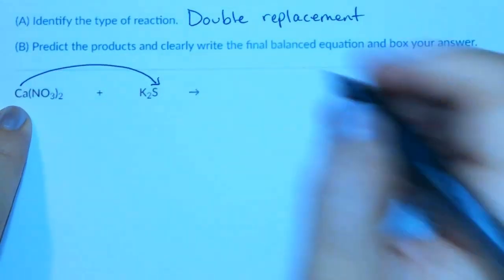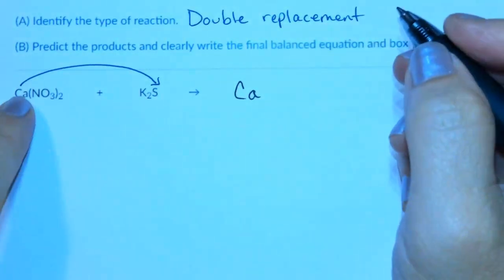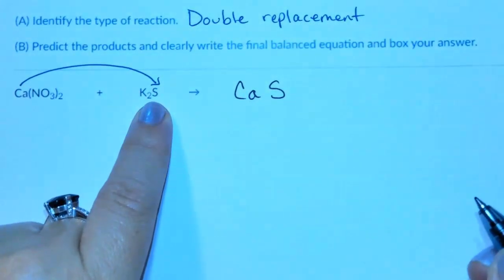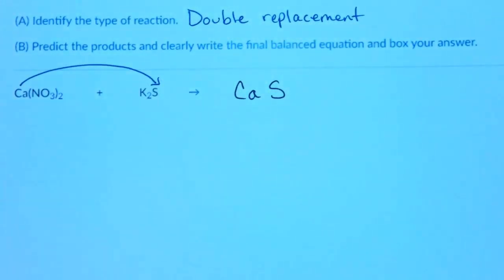First is the calcium, Ca. I will not carry over any subscripts, but it doesn't have one. And then last is the sulfide. I will not carry over a subscript there either.